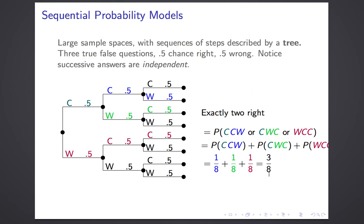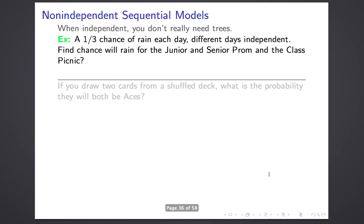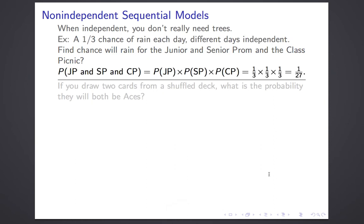It may feel like this is overkill — a really complicated way of saying that when events are independent, you multiply them. And you're correct; this tree was way more work than necessary. For example, suppose there's a one-third chance of rain each day and the chances on different days are independent. What's the chance it rains on your junior prom and your senior prom and the class picnic? Because they're independent, just use the product rule: 1/3 × 1/3 × 1/3 = 1/27. There was no need to draw a complicated tree.